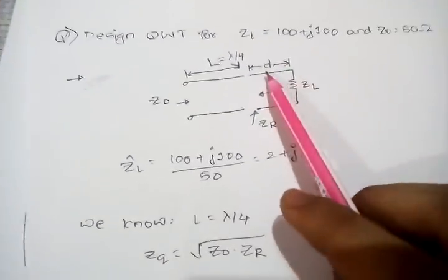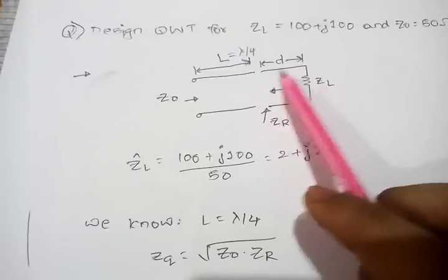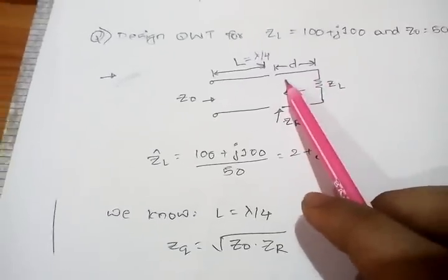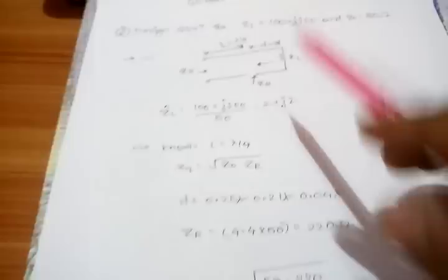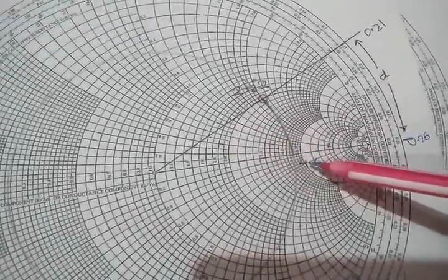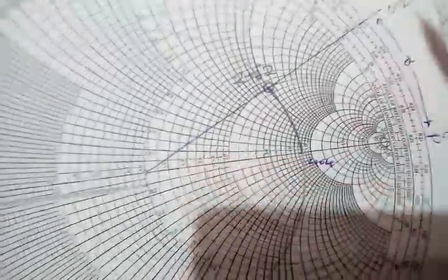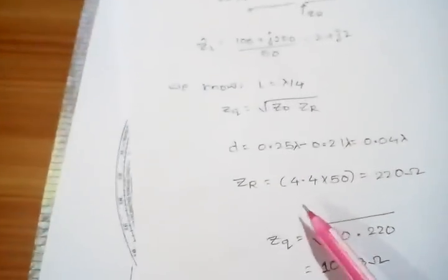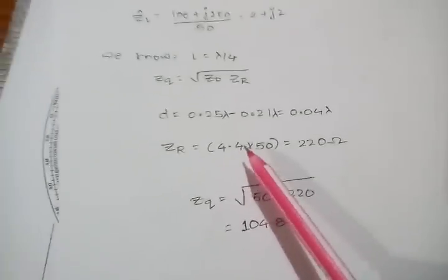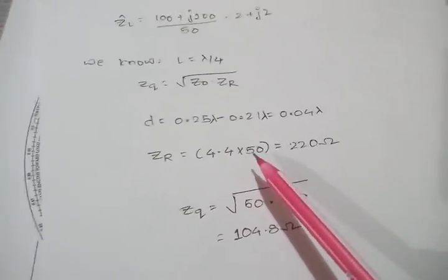I know this distance at which my quarter wave should be put. Now I need to find ZR. For that, as I have done, I have rotated it to the real axis and this value is approximately 4.4.